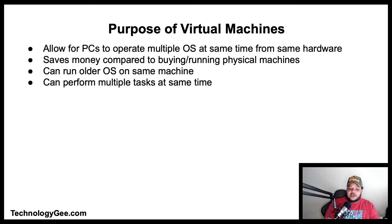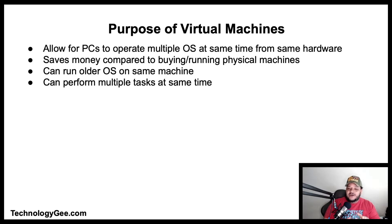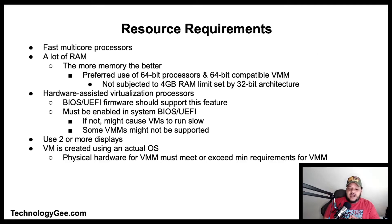Another benefit of virtual machines is the ability to run older operating systems without having to change computers or reboot. Virtual machines also allow single computers to run 32-bit and 64-bit versions of the same operating system, so applications that run better in 32-bit mode can be run without a separate computer. Ultimately, VMs perform multiple tasks at once, allowing more work on a single physical machine while saving money.